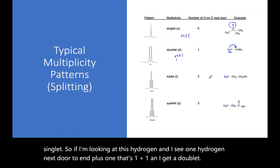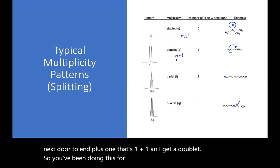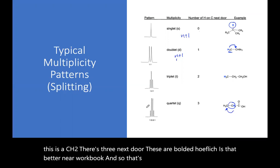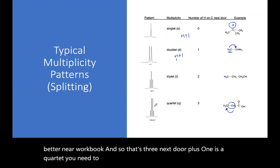So you've been doing this for a while. This is a CH2, there's three next door, these are bolded. Hopefully it shows up better in your workbook. And so that's three next door plus one is a quartet. You need to be able to go back and forth either way.